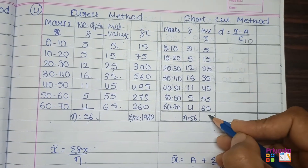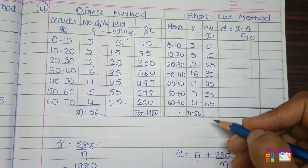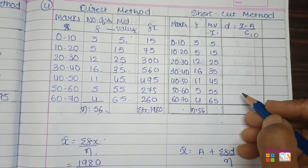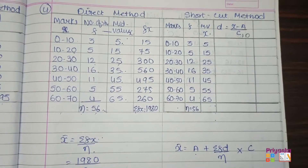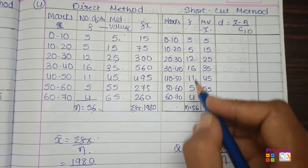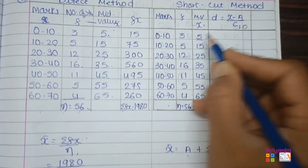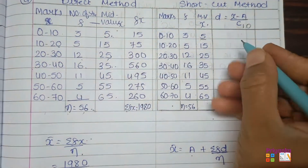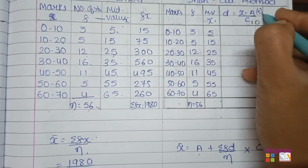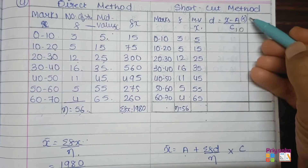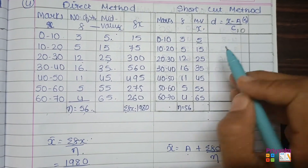From the x column, as usual, you can assume any number. Any number you choose, your answer will be correct for sure. I prefer to take the smallest value — I am going to take 5 — just to avoid getting a negative answer.